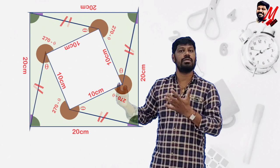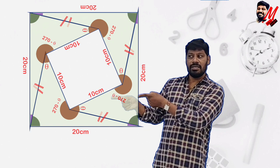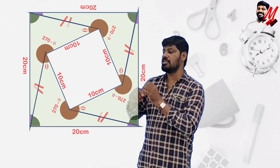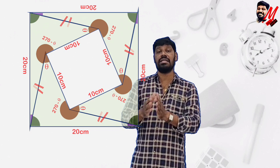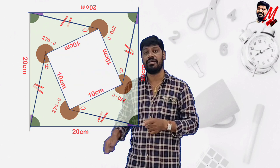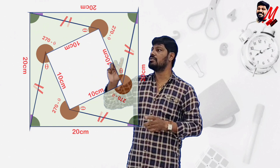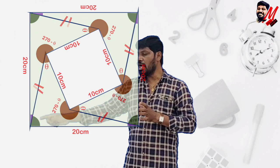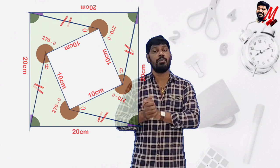Looking at the complete figure now, you can see the answer clearly. The area of the required concave quadrilateral is simply one-fourth of the entire shaded region. That entire shaded region is the area of the big square minus the area of the small square.